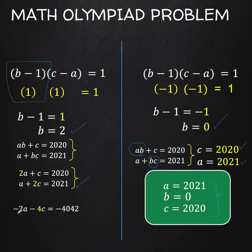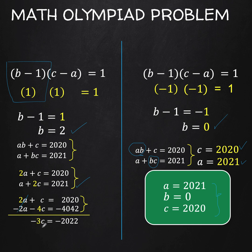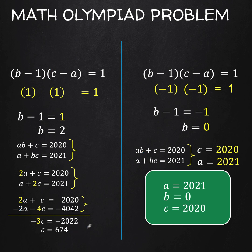Adding the two equations: 2A minus 2A is 0, 1C minus 4C is negative 3C, and 2020 minus 4042 equals negative 2022. Dividing both sides by negative 3, we find C equals 674. So we now have the value of B equals 2 and C equals 674, and we need to find A.